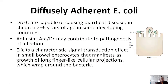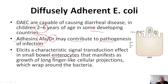Diffusely Adherent E. coli, or DAEC, is the least studied pathotype of E. coli. It is capable of causing diarrheal disease in children aged 2 to 6 years in some developing countries. The exact mechanism is not fully known, but adhesins such as Afa and Dr may be responsible. There are also signal transduction effects in the small bowel enterocytes, manifested as growth of long finger-like cellular projections that wrap around the microorganism. With this, we conclude the topic of diarrhoeagenic E. coli.